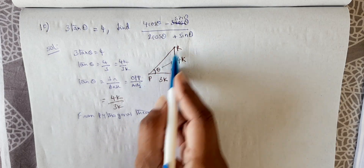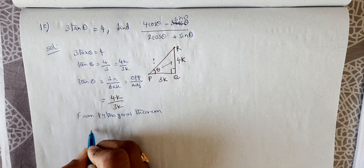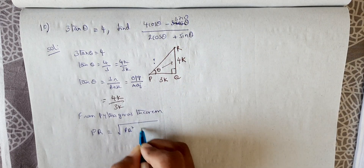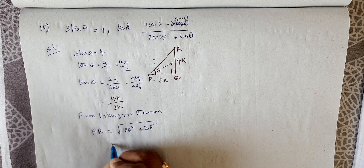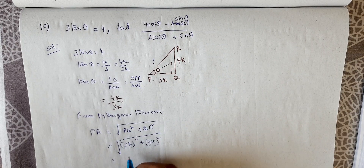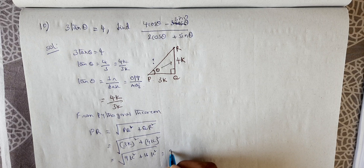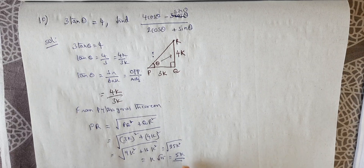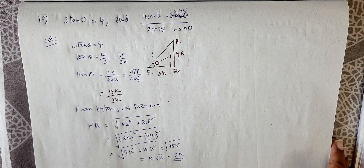Using the Pythagorean theorem: PR = √(PQ² + QR²) = √(3k² + 4k²) = √(9k² + 16k²) = √(25k²) = 5k. So the hypotenuse PR = 5k.